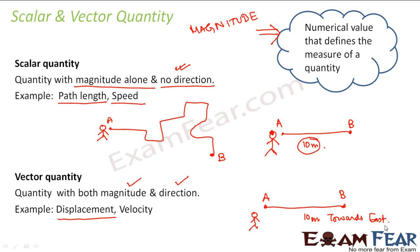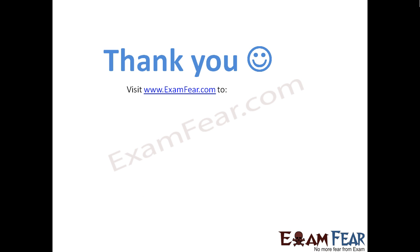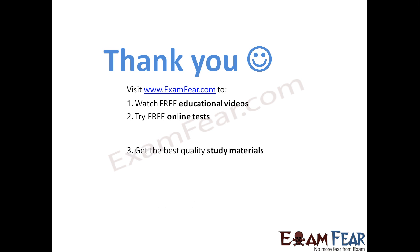With this I will conclude the topic on path length and displacement. So far in motion, to describe motion we need position, and to describe position we take help of these two quantities — path length and displacement — because they tell us how much total distance or how much total path has been covered by the object in a specific period of time. Thank you, please visit examfear.com to watch free educational videos, try free online tests, and get the best quality study materials.